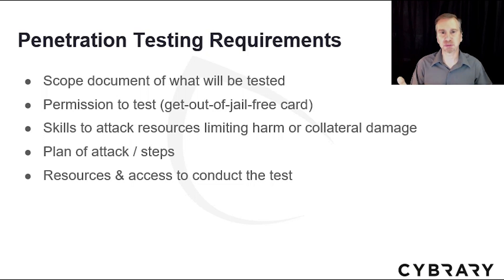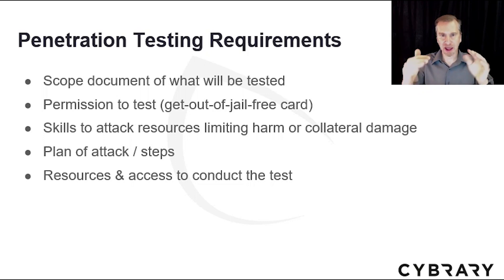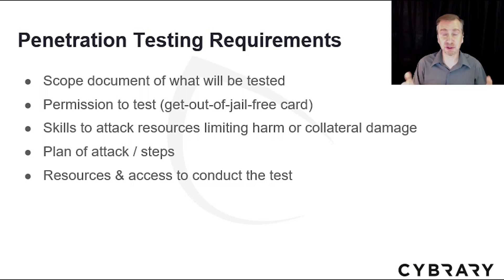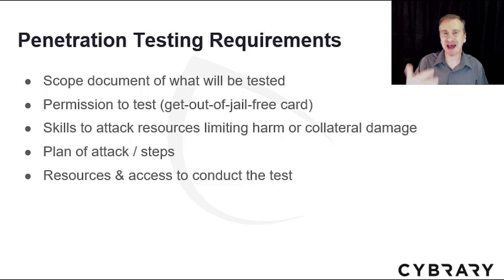First, you need to scope what you're going to be attacking. Is it a single system, a single application, a network, or a sub-network? Your scope document needs to list everything that you will be addressing, and then you stay within that scope. You also need to have permission to test — I call this your get out of jail free card — so if anyone accuses you of exploiting the computer systems, you can show them you're validated by some type of authority.